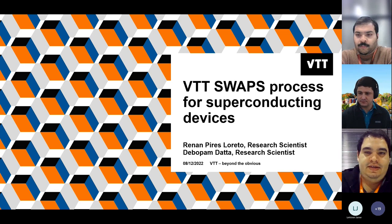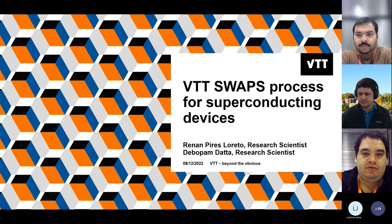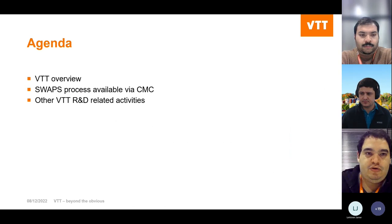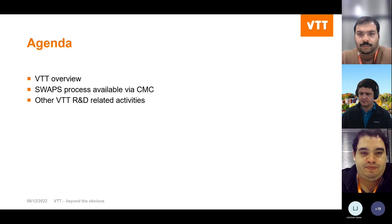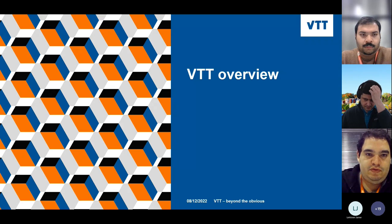Thank you for the introduction. Today we're going to talk about the SWAPS processing for superconducting devices — a process developed at VTT for fabricating Josephson junctions and devices based on Josephson junctions. First I'll give an overview of VTT, then talk about the SWAPS fabrication process, and then give an overview of the current applications using superconducting devices based on the SWAPS processing.